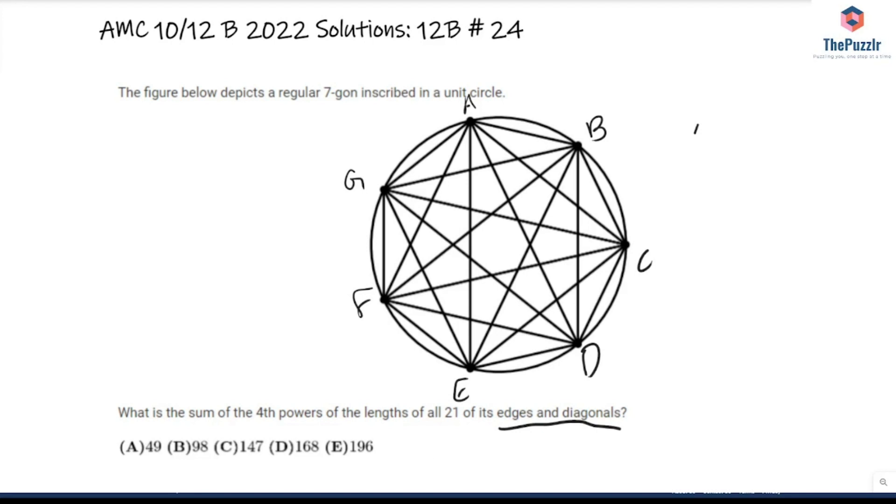So we have to find AB, so 7AB to the power of 4. Then what else do we have? We have AC. So if I were just to write instead of 7AB, what do we need to find, right? What are the unique sides? So AB, and there's 7 of those.